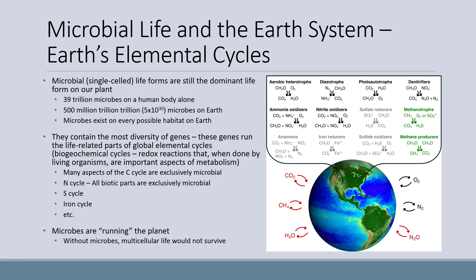I want to take a minute to talk about microbes, since they are so important to the functioning of Earth and its systems. Microbial, or single-celled lifeforms, are still the dominant lifeform on our planet. There are 39 trillion microbes on a human body alone, and it's estimated that there are 5 × 10^30 microbes on Earth. Microbes exist in every possible habitat on Earth and contain the most diversity of genes. These genes run the life-related parts of global elemental cycles, known as biogeochemical cycles — redox reactions that, when done by living organisms, are important aspects of that organism's metabolism. Many aspects of the carbon cycle are exclusively microbial, and for the nitrogen cycle, all biotic parts are exclusively microbial. There's also a very active sulfur cycle, iron cycle, and many more.